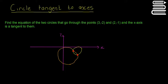So there are two possible circles that can go through those two points and still be tangent to the x-axis. We have three pieces of information: two points and the fact that the x-axis is a tangent to the circle. Remember the general form of the equation of the circle is x² + y² + 2gx + 2fy + c = 0, and we're going to need to find g, f, and c.